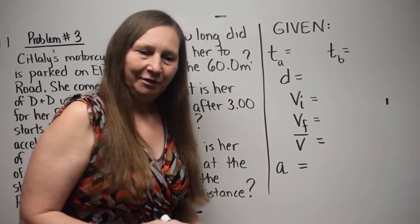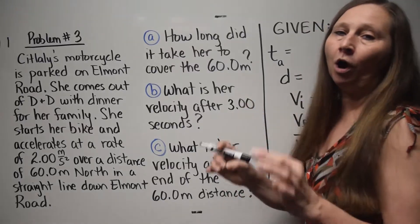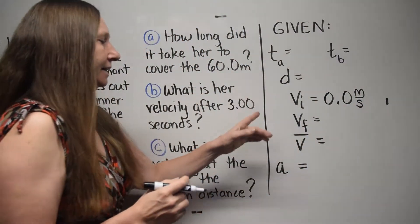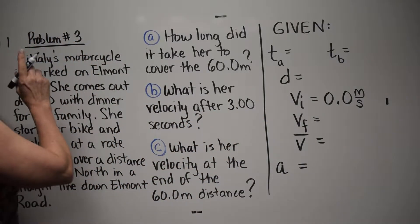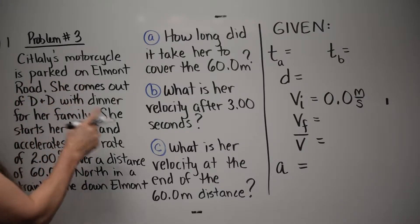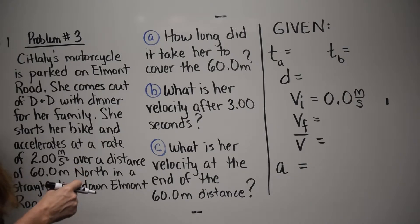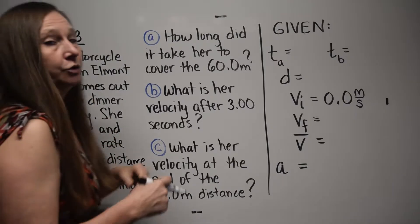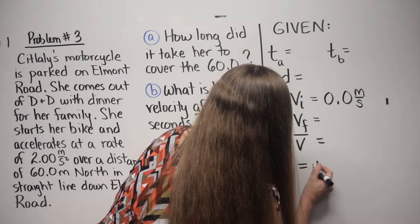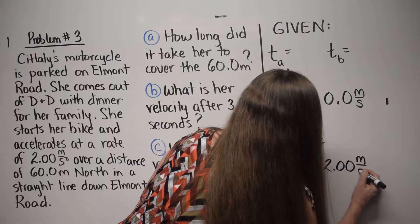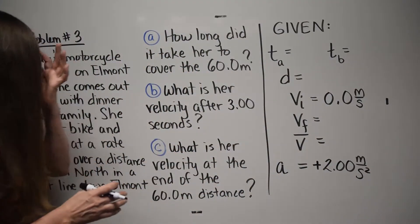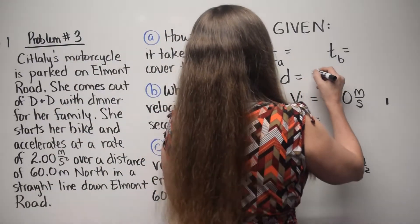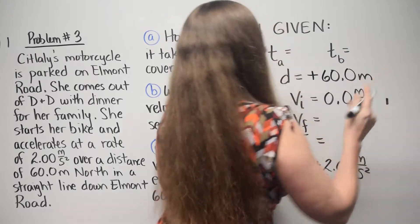Let's fill in all of the givens. Sidlali's motorcycle is parked — that means V-initial is zero. She comes out of D&D with dinner for her family. She starts her bike and accelerates at a rate of 2.00 meters per second squared north, so her acceleration is positive 2.00 meters per second squared. Over a distance of 60 meters north, so positive 60 meters is the distance she covers.